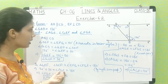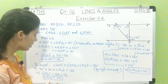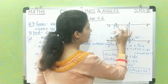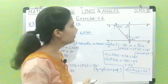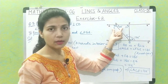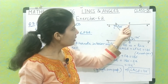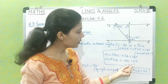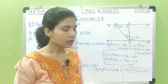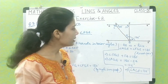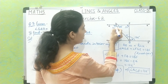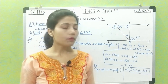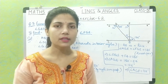So 36 plus 90 plus angle FGE equals 180, and after subtraction we get angle FGE as 54 degree. Then angle AGE and FGE are a linear pair, so 180 minus 54 gives angle AGE as 126 degree. So this is the answer for question number 3. That's all for today's session in which we discussed the first three questions of exercise 6.2.